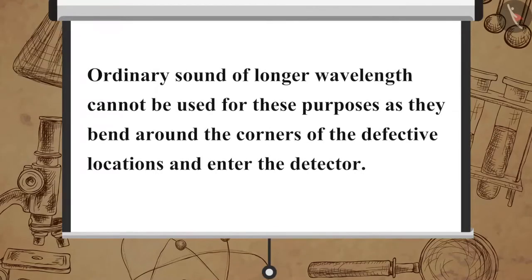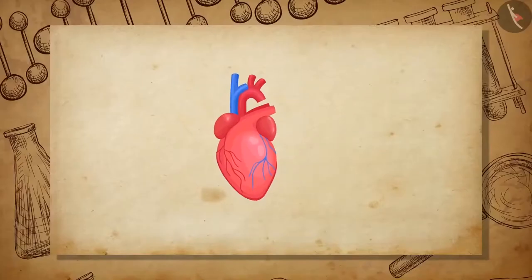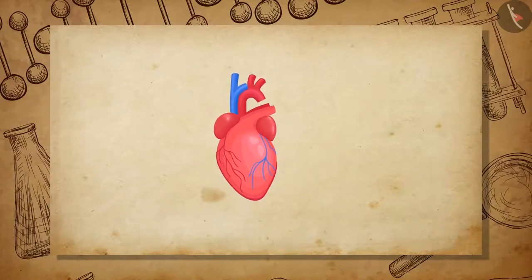Ordinary sound of longer wavelength cannot be used for these purposes as they bend around the corners of the defective locations and enter the detector. Ultrasound is made to reflect from various parts of the heart to form the image of the heart, which is called echocardiography.